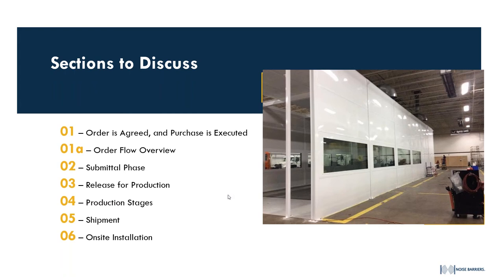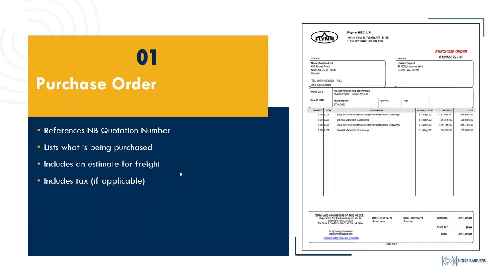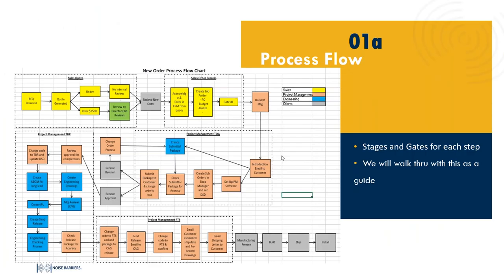We'll also touch on on-site installation. I don't have a video to share for that — we are in the process of putting one together, but I can talk you through it. For the purchase order: the PO will come with specifications of the type of window sold, size, and a description of what was purchased. It includes an estimate for freight if one was provided, and taxes if applicable.